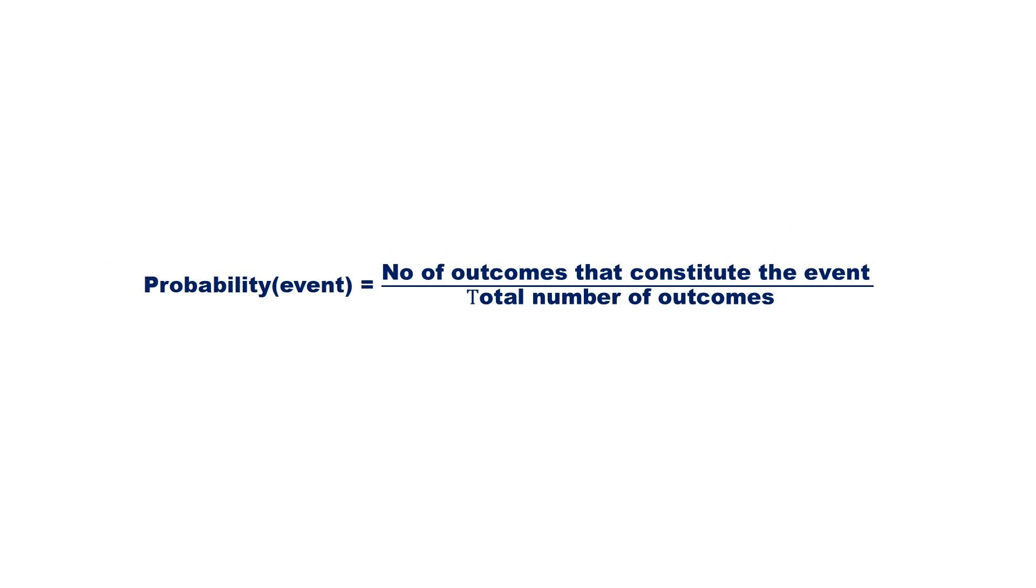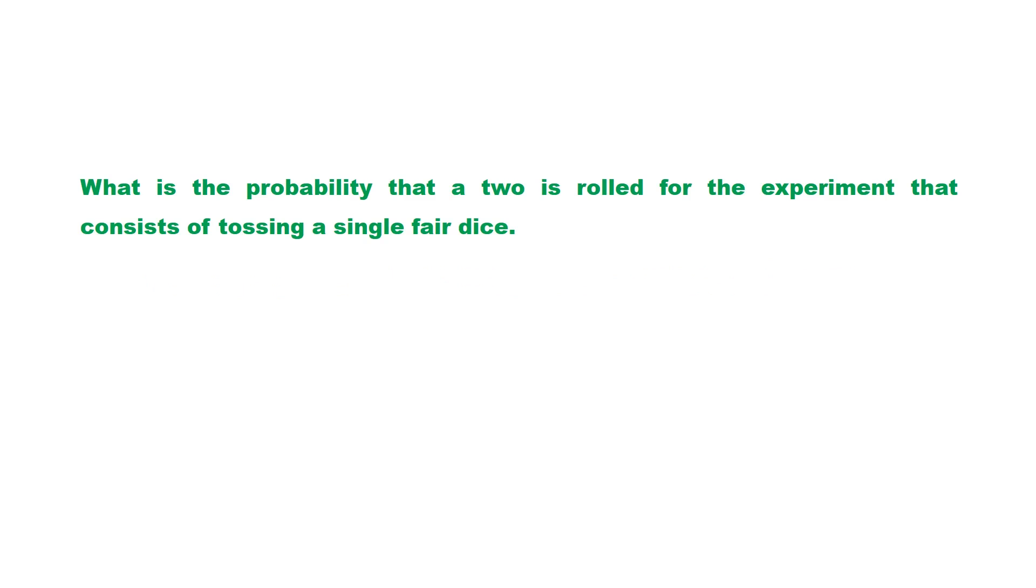That means the probability of an event equals the number of outcomes that constitute the event divided by the total number of outcomes. What is the probability of getting 2 when a dice is rolled? Out of the 6 possible outcomes, getting a 2 is only 1 outcome. Hence, the probability of the event is 1/6.